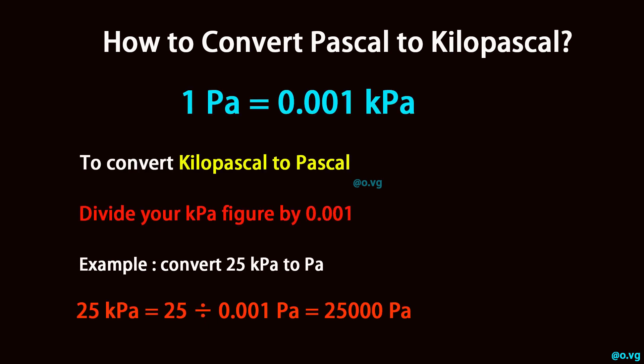To convert kilopascal to pascal, divide your kilopascal figure by 0.001. For example, convert 25 kilopascal to pascal: 25 kilopascal equals 25 divided by 0.001 pascal, which equals 25,000 pascal.